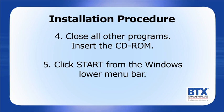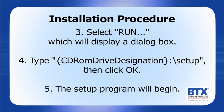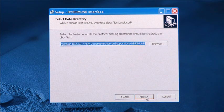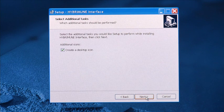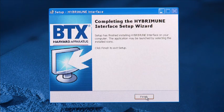Close all other programs and insert the CD-ROM. Click Start from the Windows lower menu bar, select Run, which will display a dialog box. Type the CD-ROM drive designation colon slash setup, then click OK. The setup program will begin. Once setup is complete, the completing the HYBRAMUN interface setup wizard will appear. Click Finish.